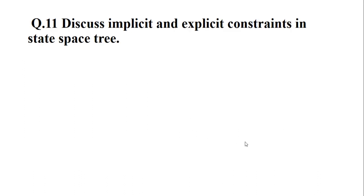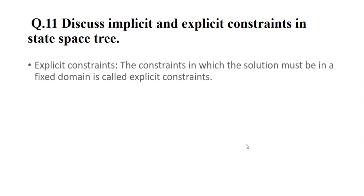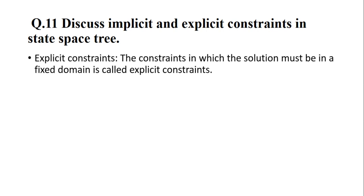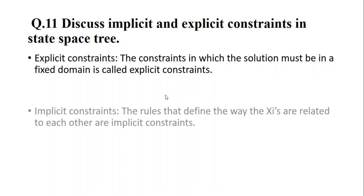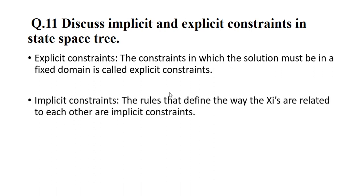Question 11: Discuss implicit and explicit constraints in the state space tree. Explicit constraint: the constraint in which the solution must be within a fixed domain is called an explicit constraint. Implicit constraint: the rule that defines how the solution elements are related to each other is called an implicit constraint.